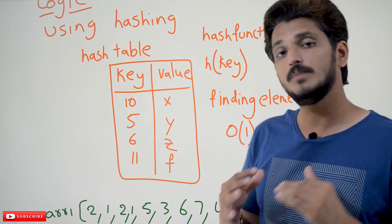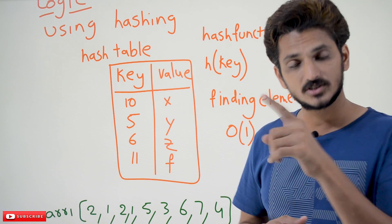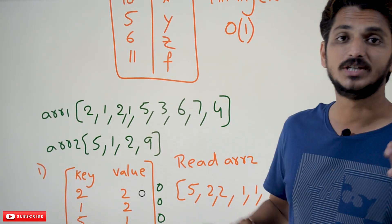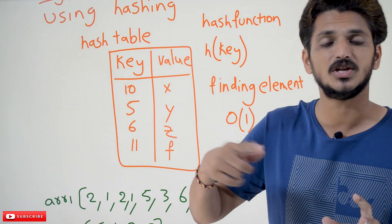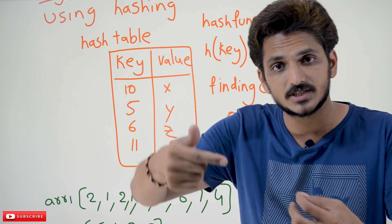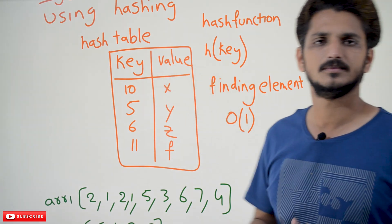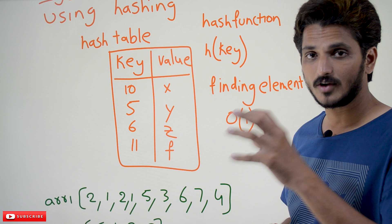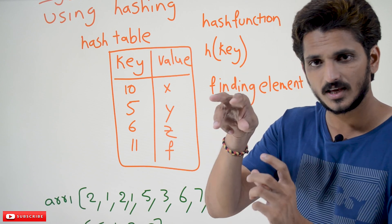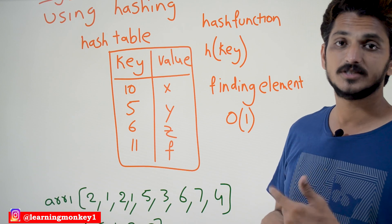Coming to our implementation, it is based on Python, but other languages also have hash table classes — in Java, hash table class is there and you can use that to create the hash table. In Python we can use dictionaries to create a hash table. A dictionary is a key-value pair, and the underlying structure used in a dictionary is a hash table. So if you use a dictionary, it is automatically the same as a hash table.